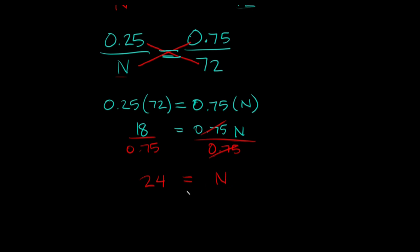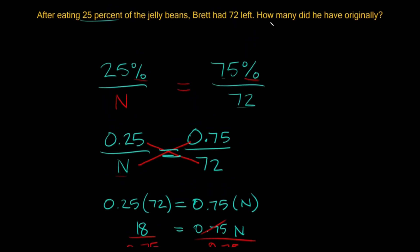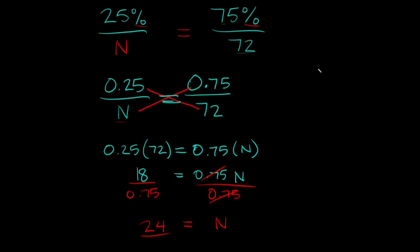So we just figured out how many pieces he ate. He ate 24 pieces. But the problem asks how many did he have originally? Or in other words, what was the total amount before?